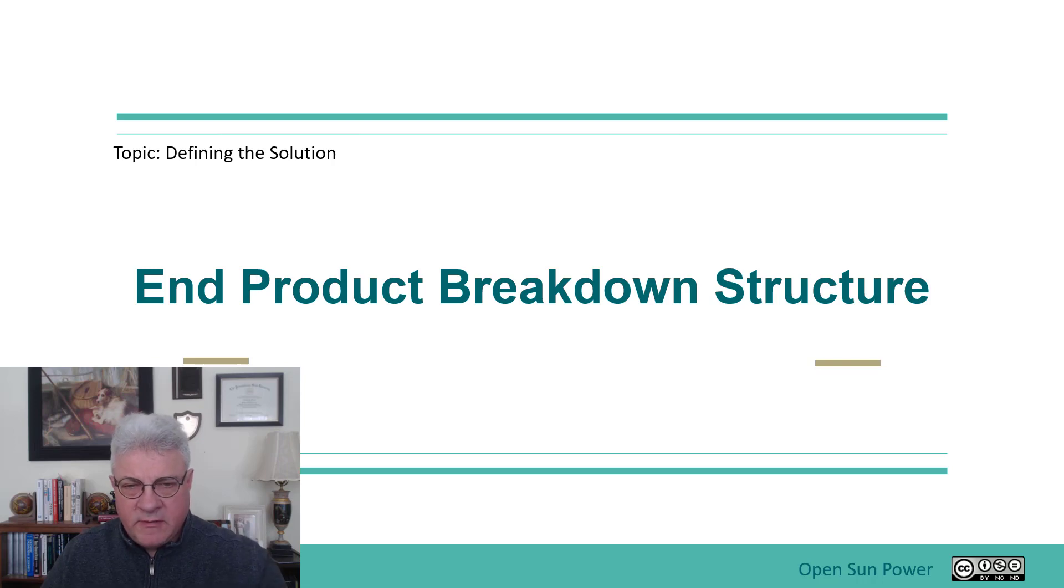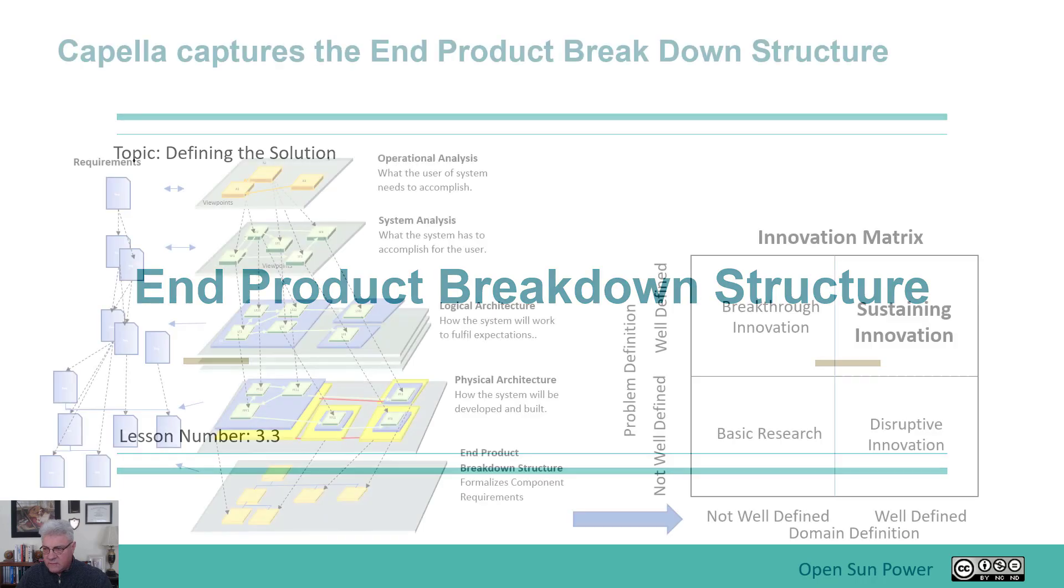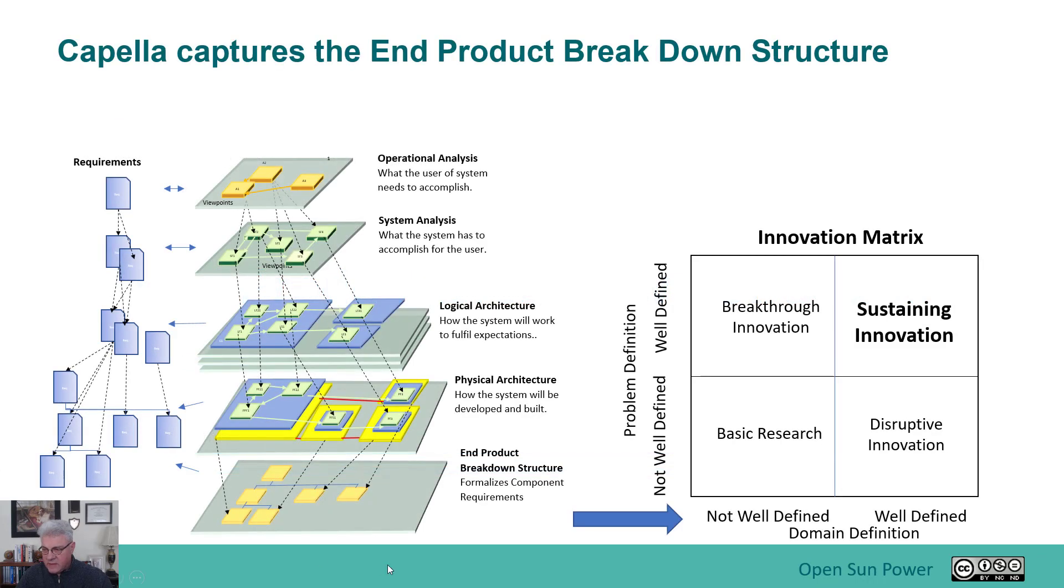In this section we're going to talk about the End Product Breakdown Structure. The End Product Breakdown Structure is the result of actually going through the other phases that we had previously discussed in the intro to Capella presentation. We're still in the Defining the Solution topic, and with this lesson we're going to talk about the purpose of the End Product Breakdown Structure.